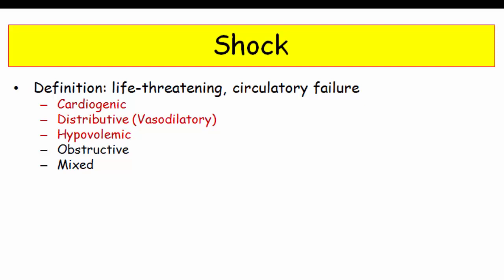Obstructive causes such as saddle embolus are discussed in the pulmonary hypertension section, and these vignettes aren't typically presented with shock. Similarly, mixed etiologies such as acute adrenal hemorrhage secondary to sepsis will have other derivative questions such as hypothalamic and pituitary responses.